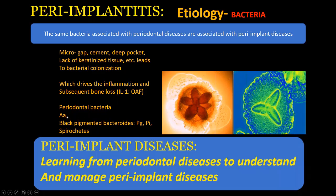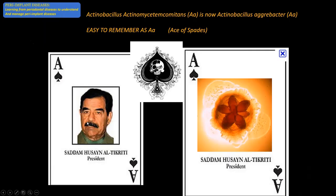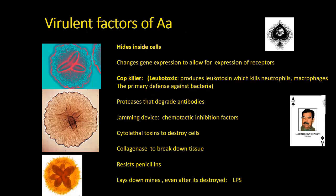The main culprits are Aggregatibacter actinomycetemcomitans (AA) and the black-pigmented bacteroides, now reclassified. AA is the ace of spades — it can hide inside cells like a virus, changes gene expression to promote colonization, produces leukotoxins that kill white blood cells, neutrophils, and macrophages. It produces proteases that degrade antibodies and collagenases that break down tissue, is not susceptible to penicillin-type antibiotics, and is a spore former that can lie dormant and then reactivate.